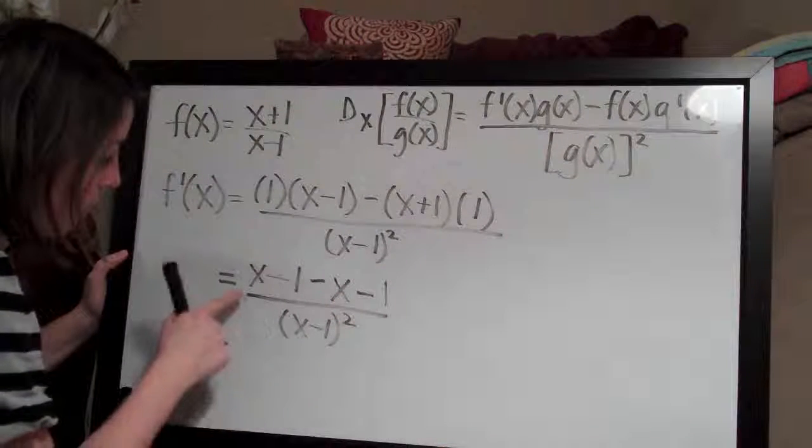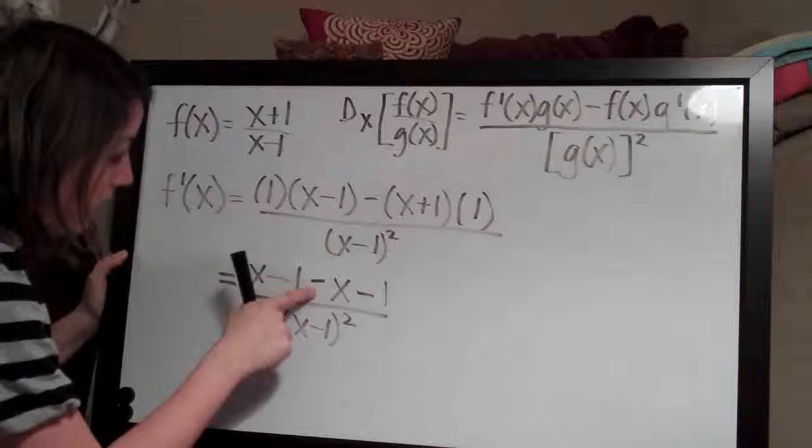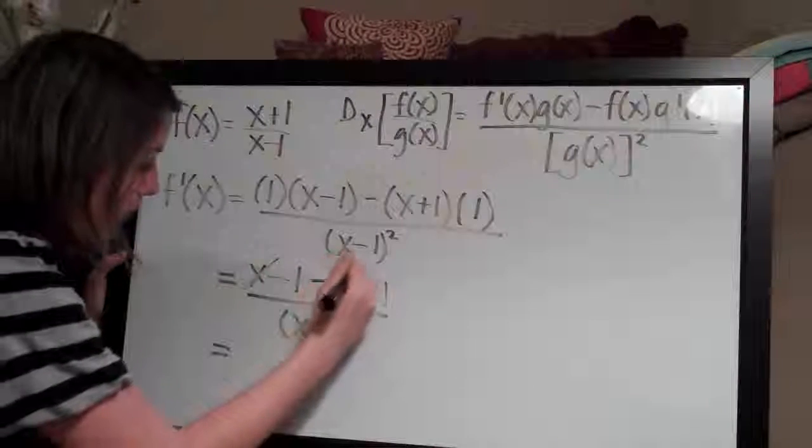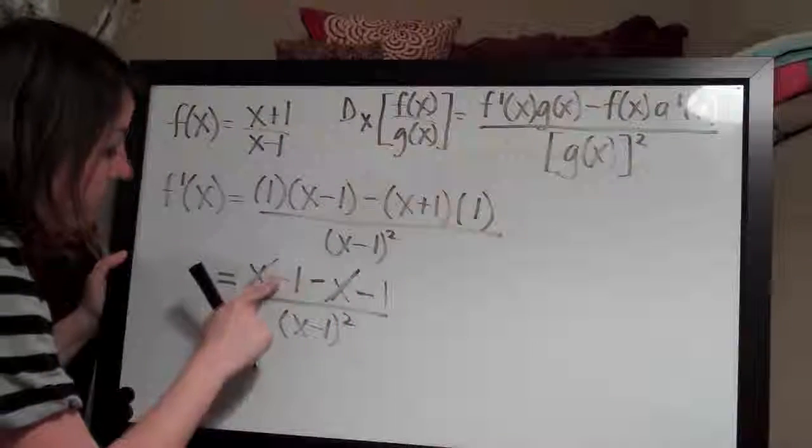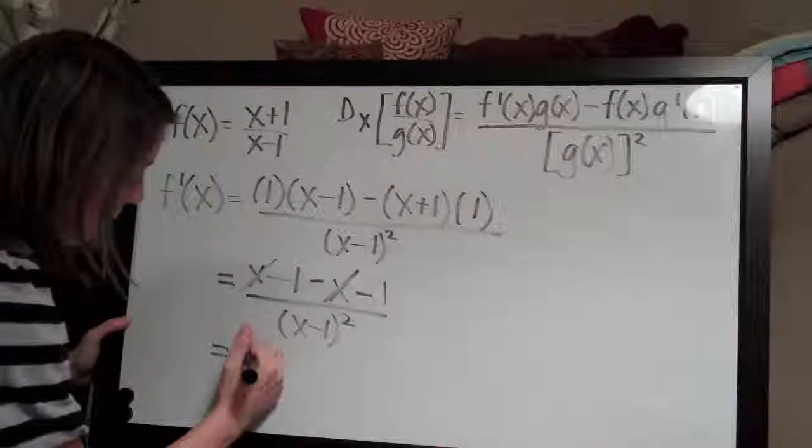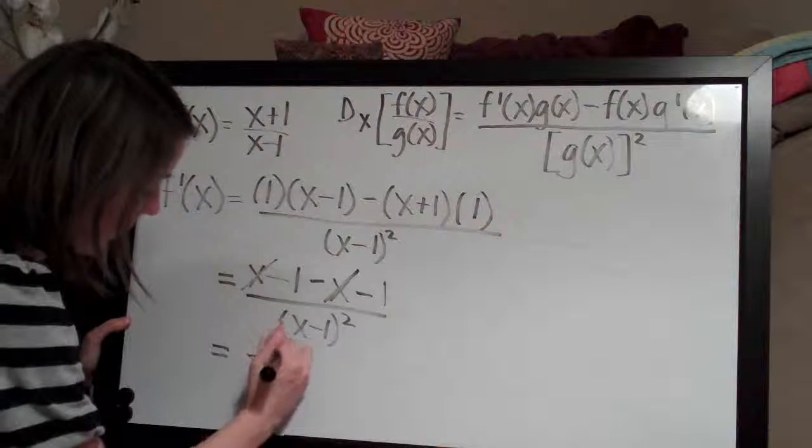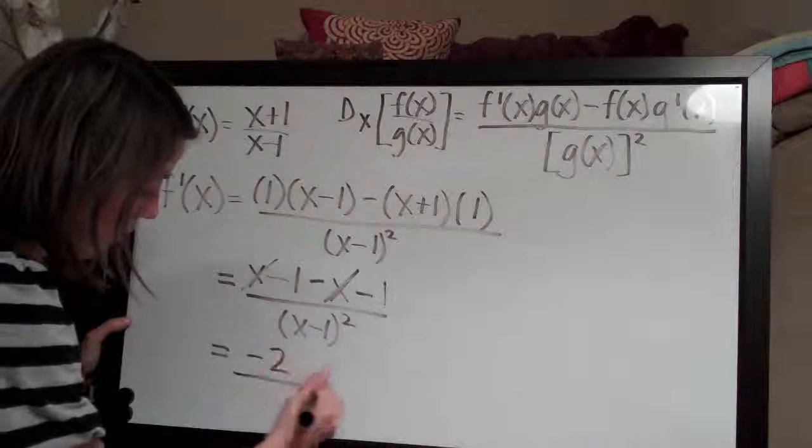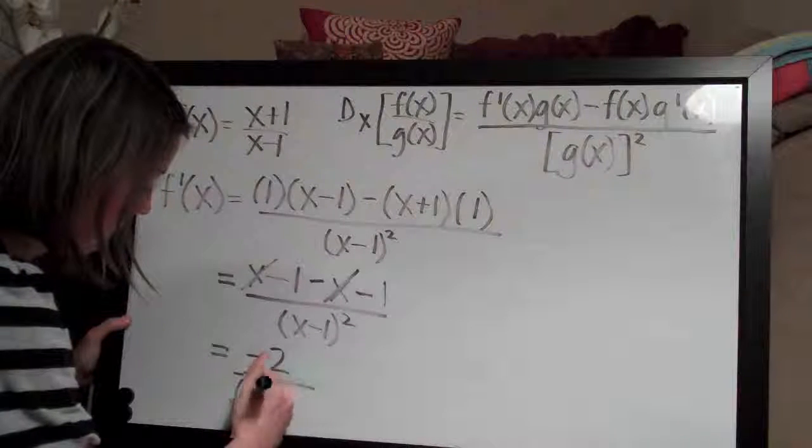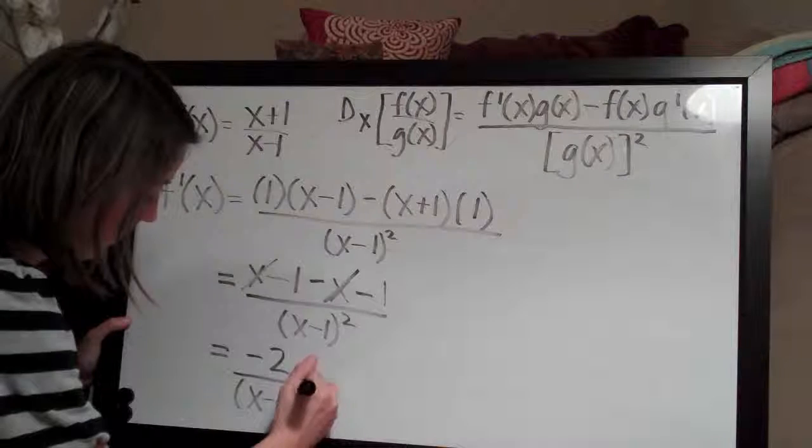So this is actually going to turn out to be, we have x minus x, so those are going to cancel. And then we have negative 1 minus 1 is actually going to be a negative 2, so we're looking at negative 2 over x minus 1 squared.